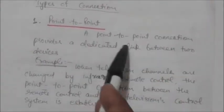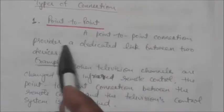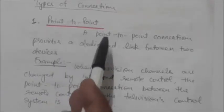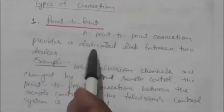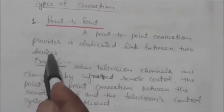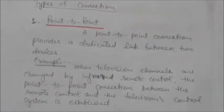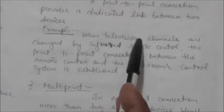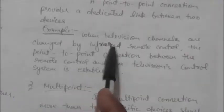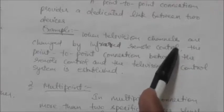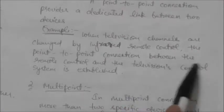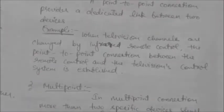In a point-to-point connection, a dedicated link is provided between two devices. For example, when television channels are changed by an infrared remote control, a point-to-point connection between the remote control and the television's control system is established. This is an example of a point-to-point connection.